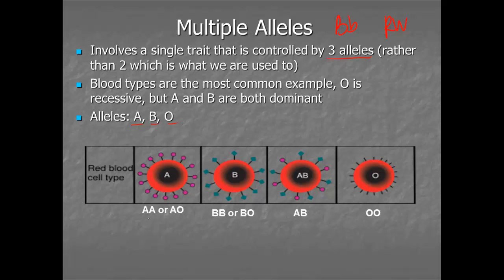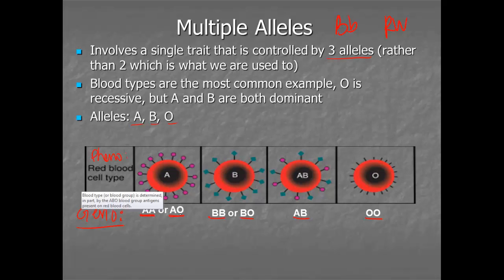If you think about the combinations, you could have six different genotypes. The rule is that A and B are codominant — neither is dominant over the other — but O is always recessive. So with those six genotypes, you can actually get four phenotypes. AA and AO will both give type A blood. BB or BO will both give type B blood. AB gives a unique blood type called AB, because neither is dominant over the other. And both recessives give type O blood.